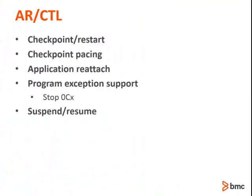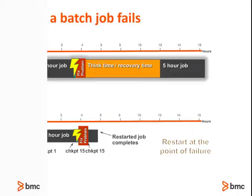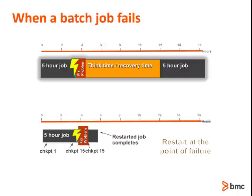ARC products provide a variety of features to streamline and enrich a batch processing environment. When a batch job fails, you generally recover the affected databases, back out all of the changes made so far, and restart the job from the beginning. This takes time, manual effort, and up to double the CPU usage that a successful job would have taken. In the example here, a job that normally runs in 5 hours could take 16 hours to complete.